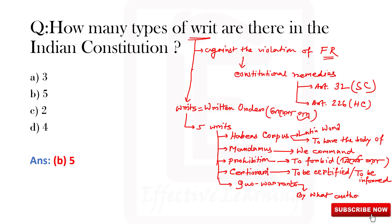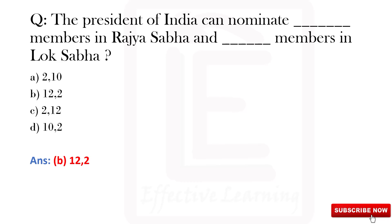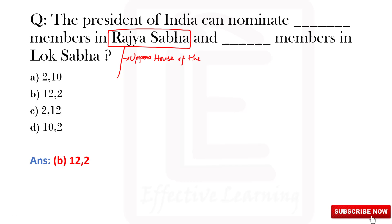The President of India can nominate how many members — 10 members in Rajya Sabha and 10 members in Lok Sabha? The answer is B, that is 12 members in Rajya Sabha and 2 members in Lok Sabha.